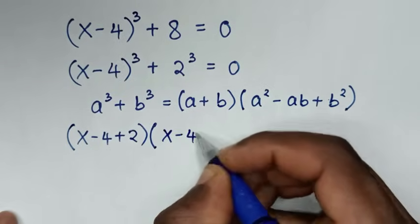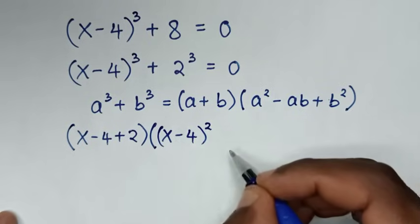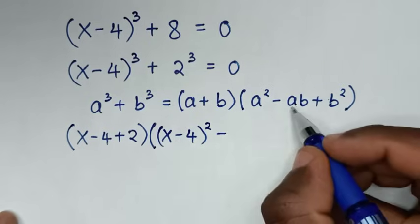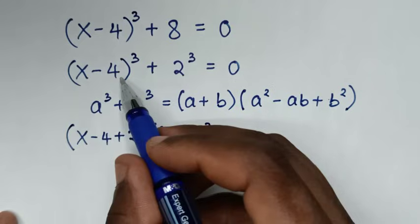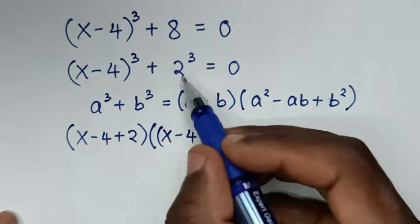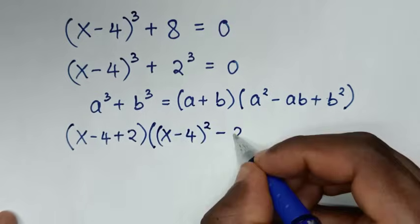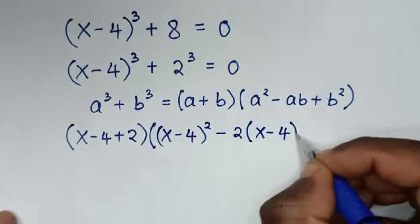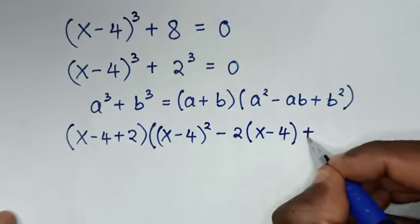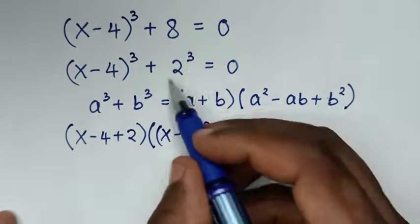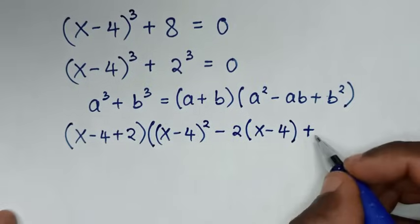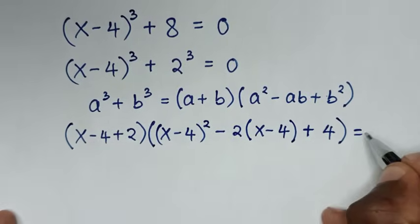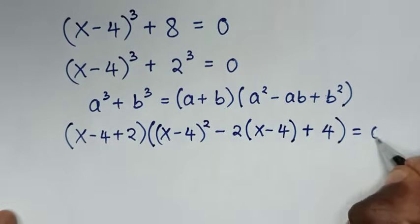Completing the factored form: (x - 4 + 2) times [(x - 4)² minus 2(x - 4) plus 2²], where 2² = 4, and the whole expression equals 0.